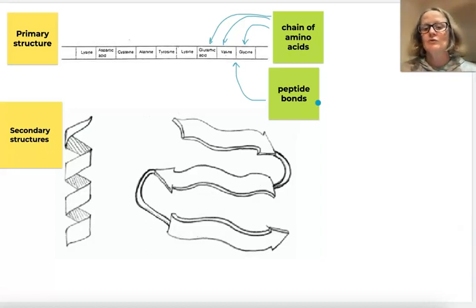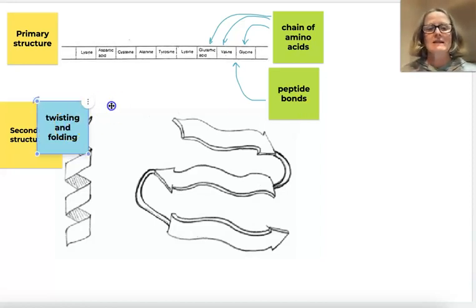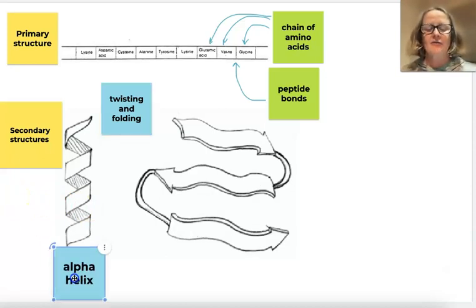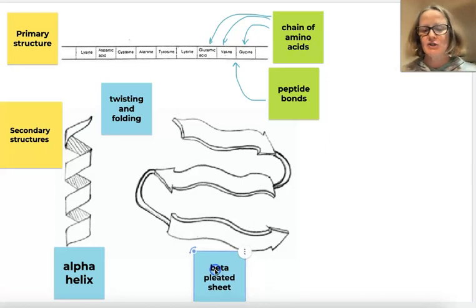The next thing we do to that chain is to twist it and fold it. When we twist and fold, we get its secondary structure. There are two types of secondary structure: the alpha helix and the beta pleated sheet. You can see the alpha helix is a twisted spiral, and the beta pleated sheet is layers folded back on one another, just like when you're folding the washing and you layer things on top of each other.